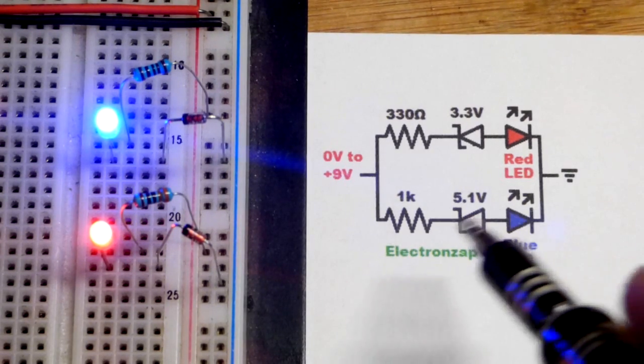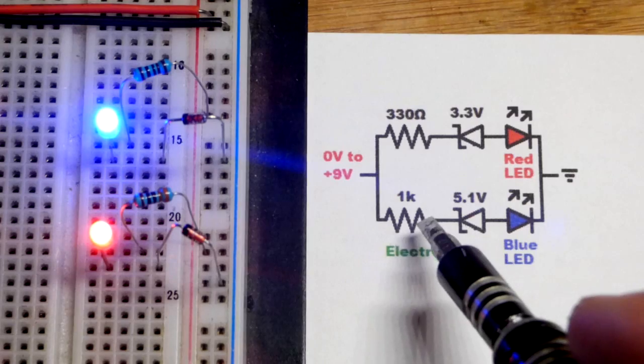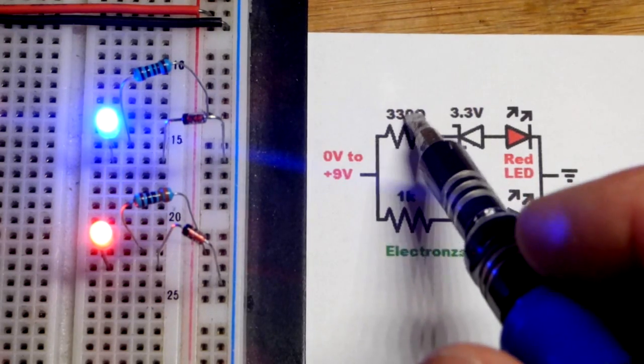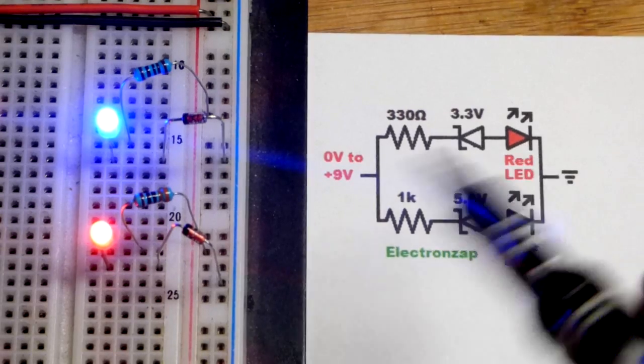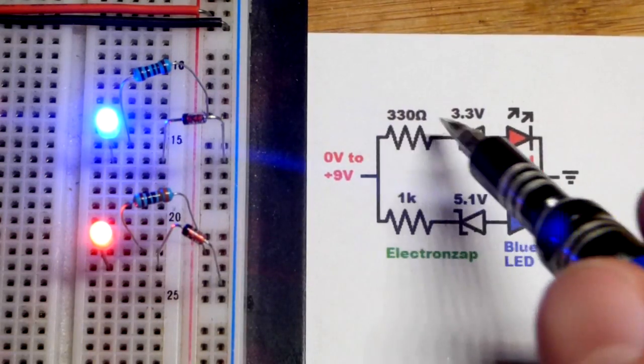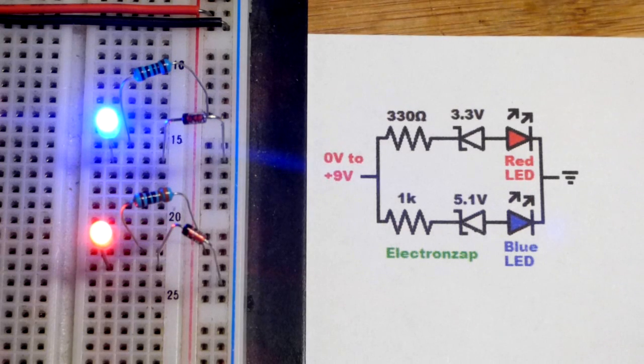And the blue LED doesn't need as much current to be bright. So it has a higher value resistor to limit the current more. And the red LED does need a significant amount more current than the blue one to be the same brightness. So we got a lower value, as I mentioned before.